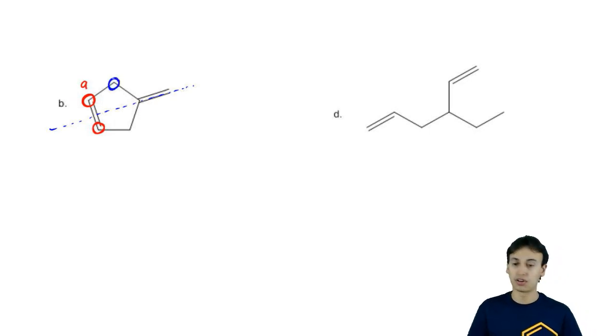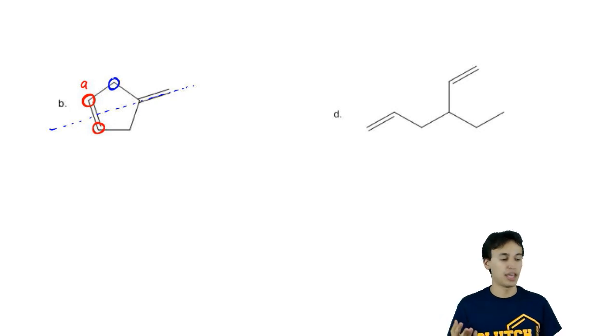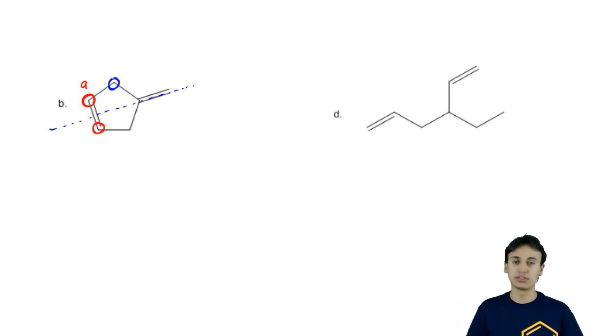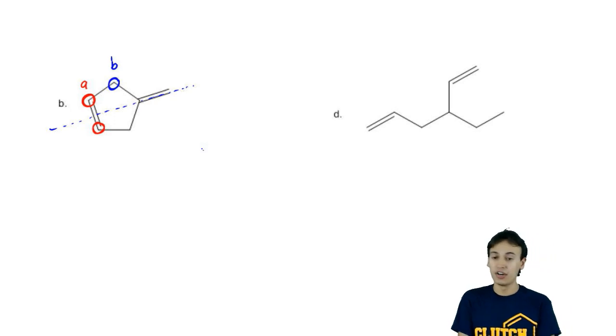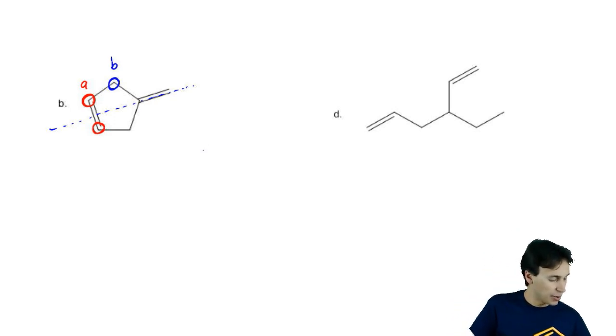Then I notice that these hydrogens are on an alkane, a regular sp3 hybridized carbon. That's going to be another type of hydrogen. Now, I also notice that there's this carbon here.